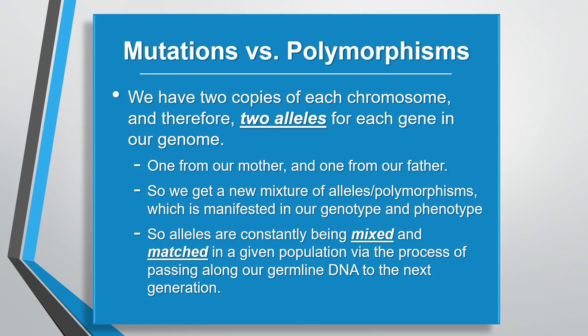During fertilization, our mother provides half of our chromosomes and one complete set of alleles of all our genes via her egg, and our father provides the other half of our chromosomes through his sperm, forming the other complete set of alleles. We get two complete yet different sets of alleles at fertilization. Only one of the two potential alleles of each gene that our parents have is given to us, and a new mixture of polymorphisms or alleles is then manifested in our genotype and phenotype. Therefore, alleles are constantly being mixed and matched in a given population via fertilization.